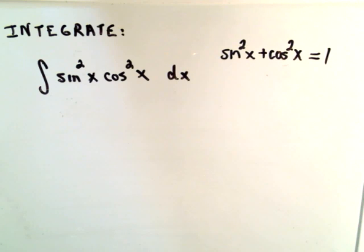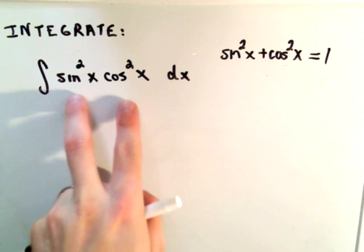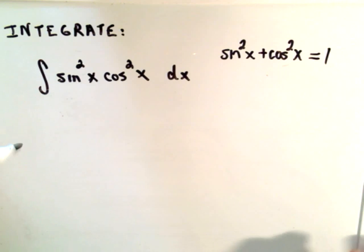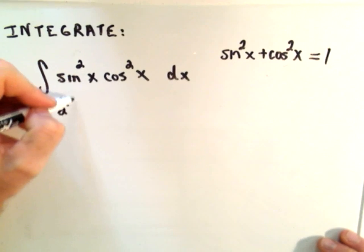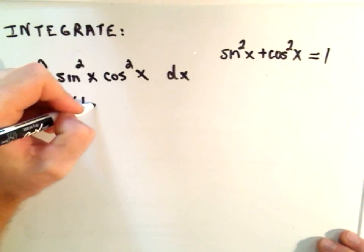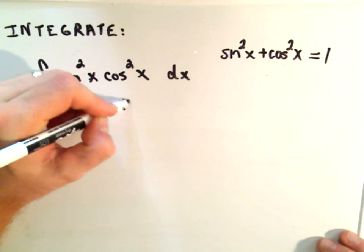Here's our problem. We can't do the previous trick because neither of the powers are odd, but I'm going to use my trig identity. Sine squared equals one-half, one minus cosine of 2x.